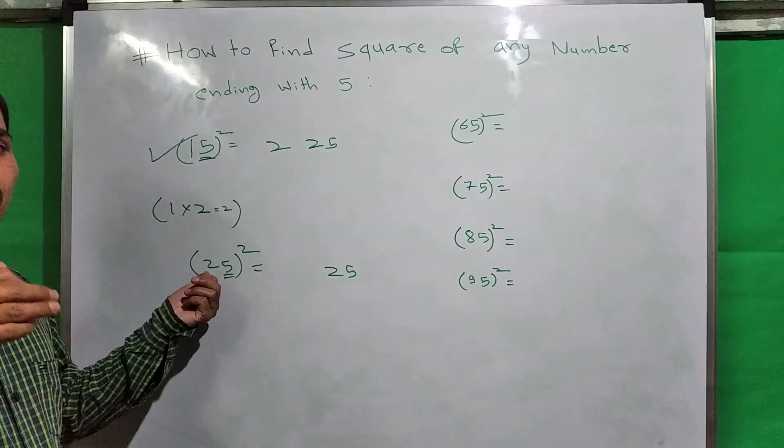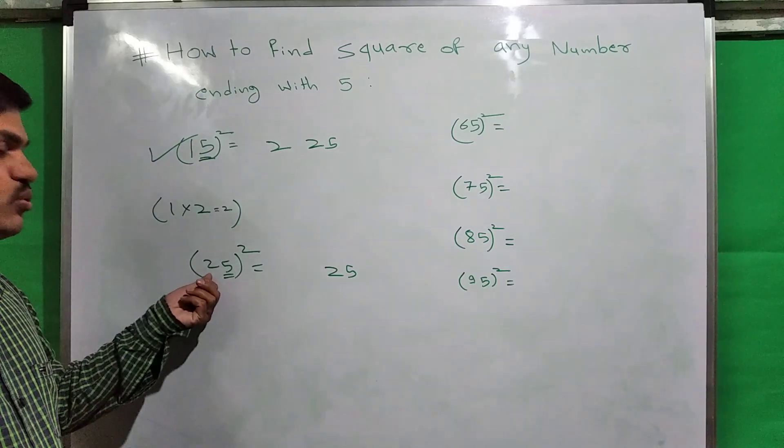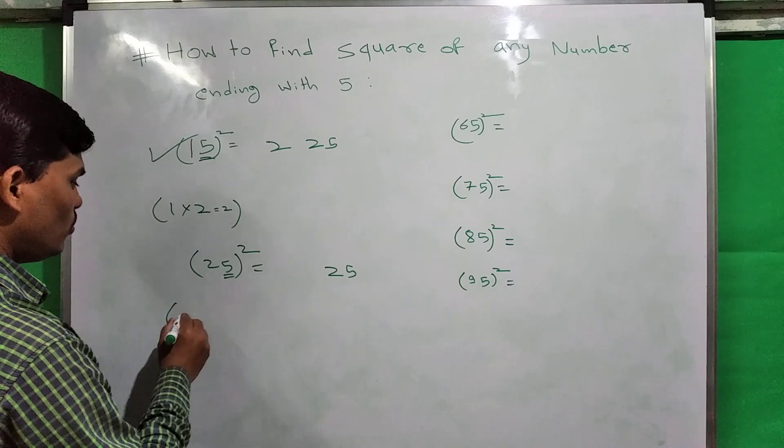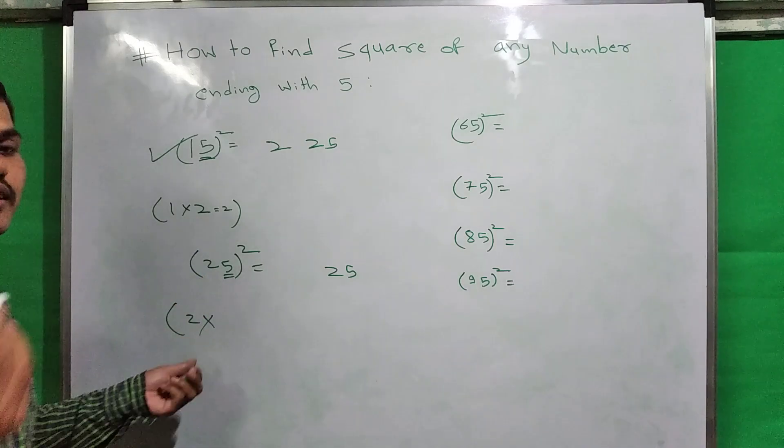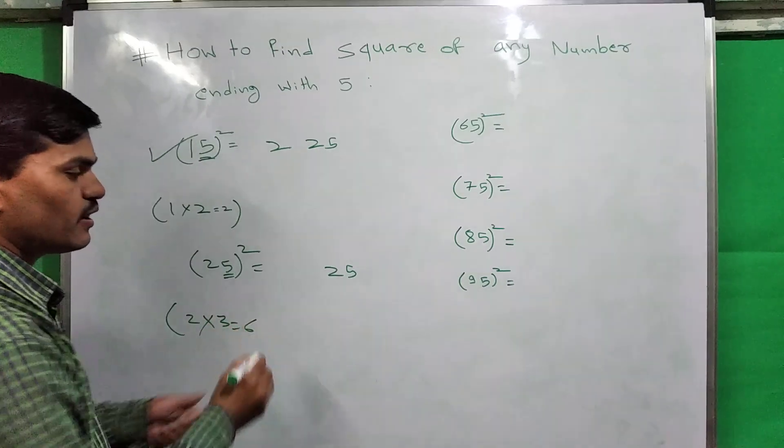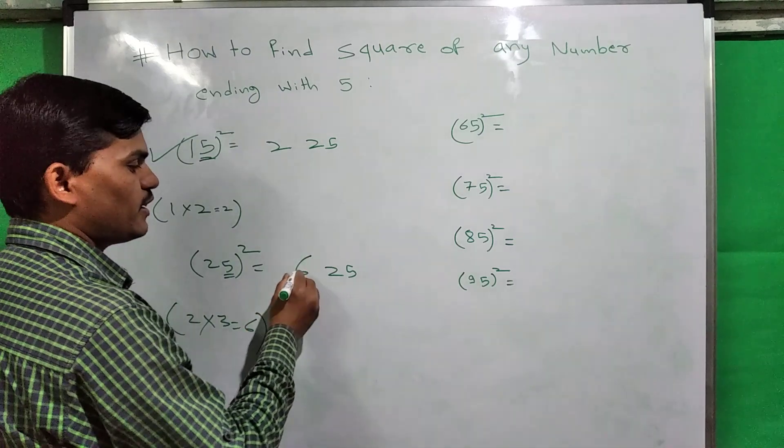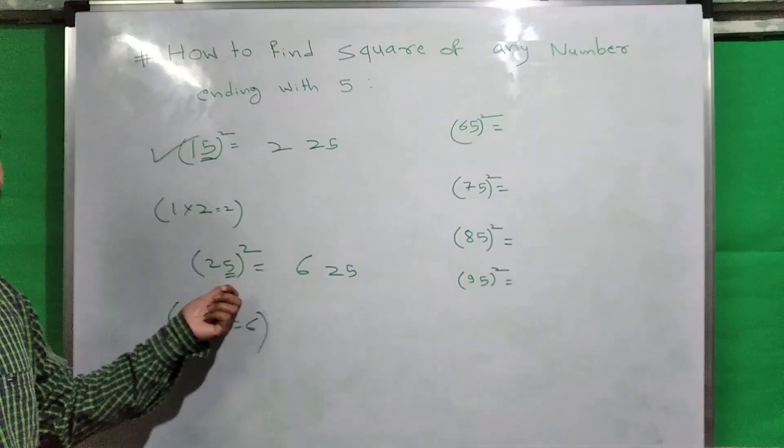Then this 2. Take the next digit of 2, which is 3. Make the multiplication of this 2 and the next number of 2, which is 3. So 2 times 3 is 6. Write down this answer before this 25. We get 625. This is the square of 25.